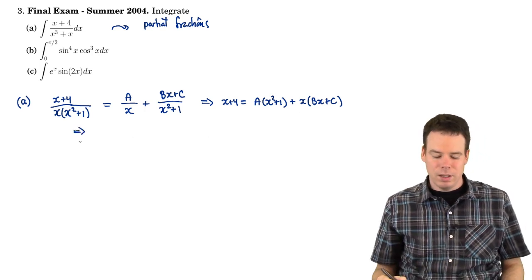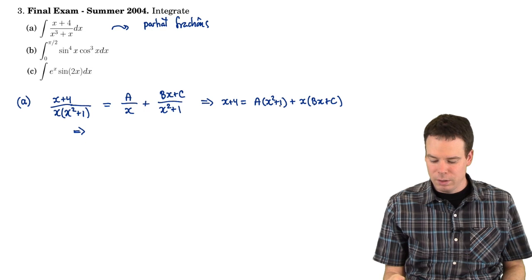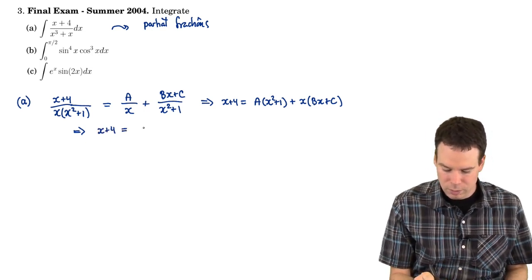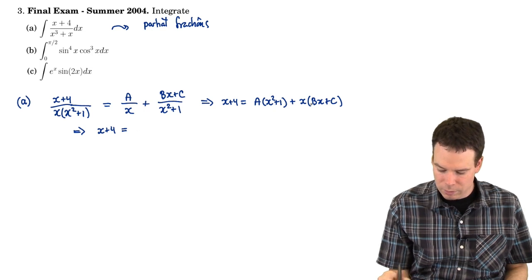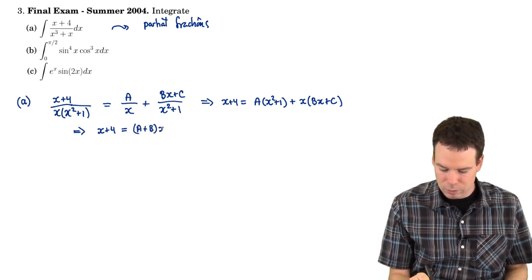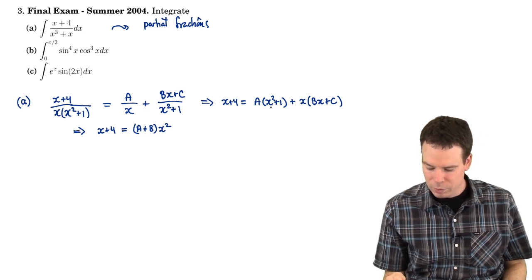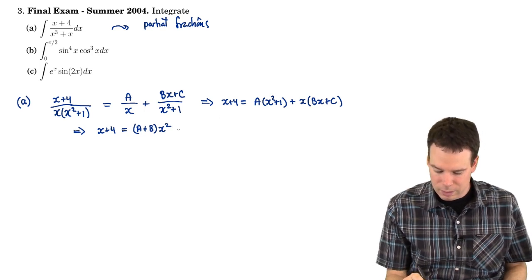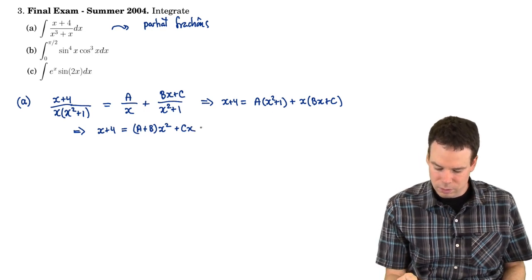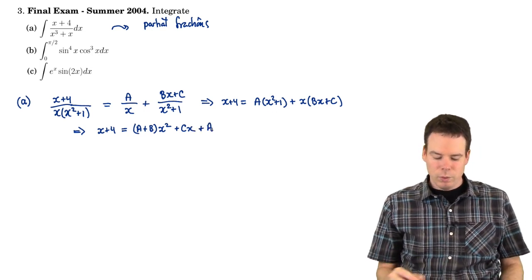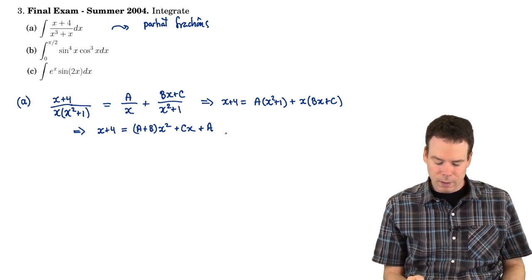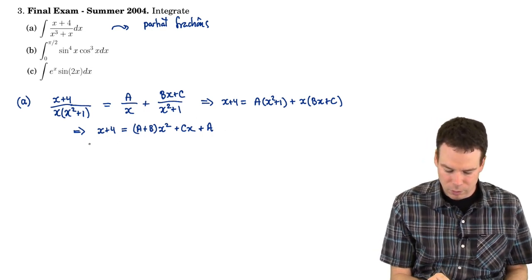What can we do at this stage? Well, there's a couple options here. We can expand both sides. Maybe we'll do that. x plus 4, ax squared, bx squared, so that's an a plus b times the x squared term. What's the x term coming from on this side? Well, there's a cx, so that's a cx. And what's the constant? The constant is just the a. So we've got that x plus 4 has to be this expression, and that tells us then what the coefficients have to be.